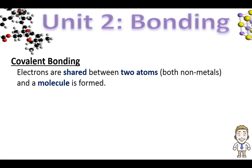Today, however, we're going to look at how atoms do this a different way known as covalent bonding. In covalent bonding, you're going to see how electrons are shared between two atoms, both of which are nonmetals, and we form a new particle called a molecule.